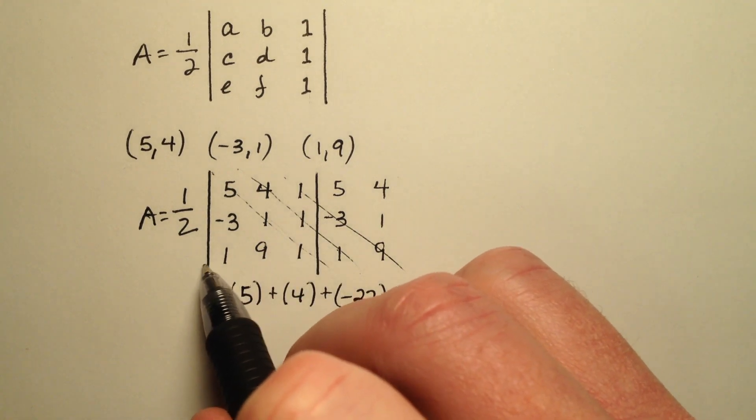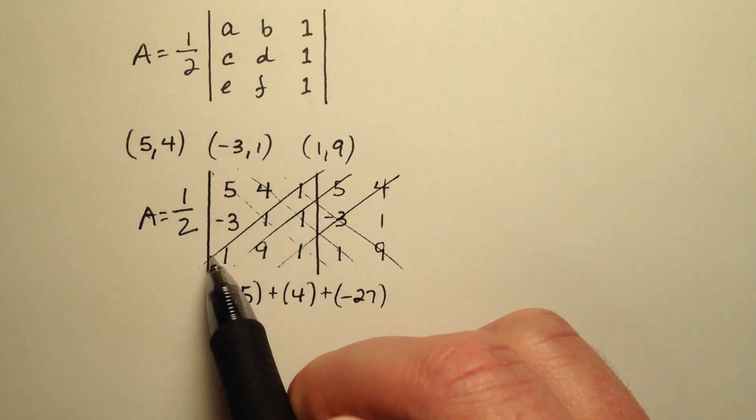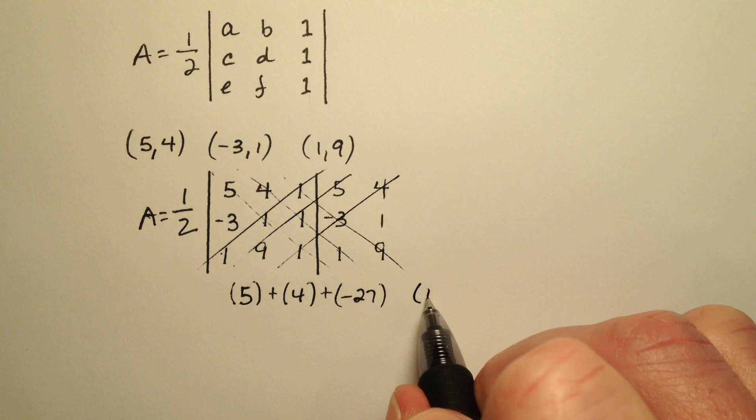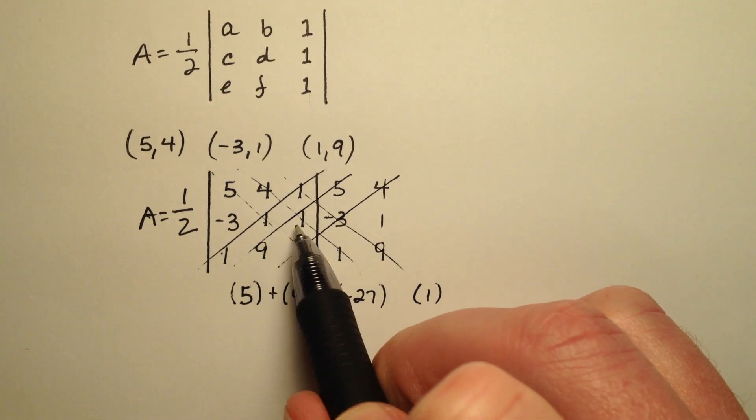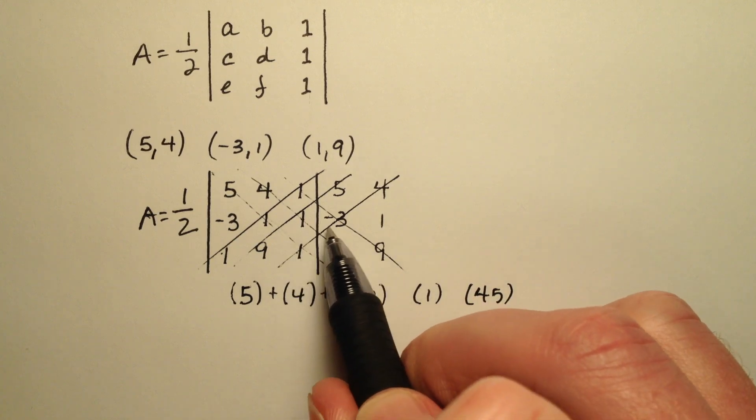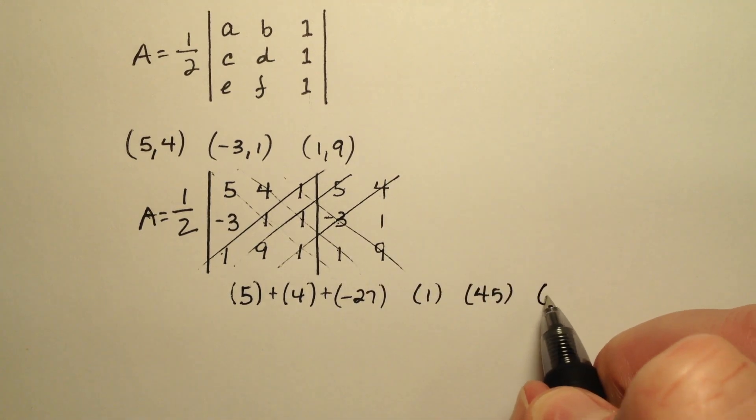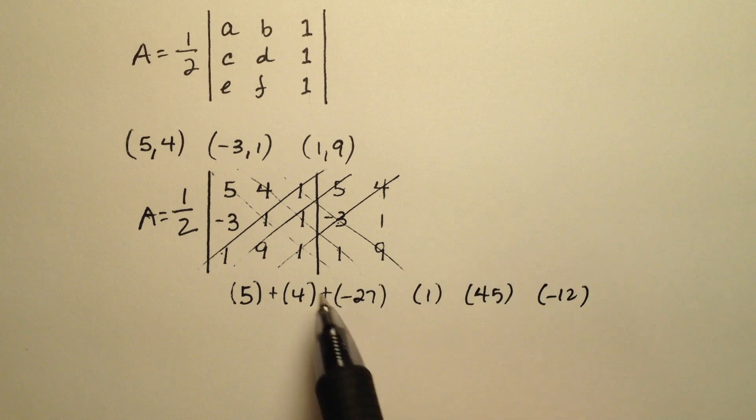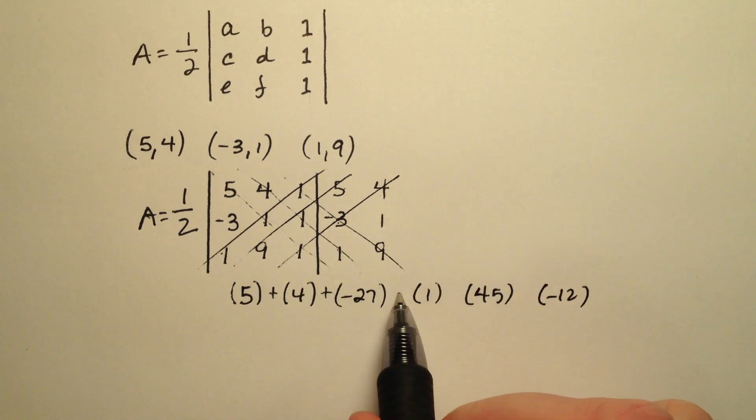Now I'm going to do these minor diagonals, go back up the other way. So 1 times 1 times 1 is 1. 9 times 1 times 5 is 45. And finally, 1 times -3 times 4 will be -12. And since these were the minor diagonals, they are going to get negative signs.